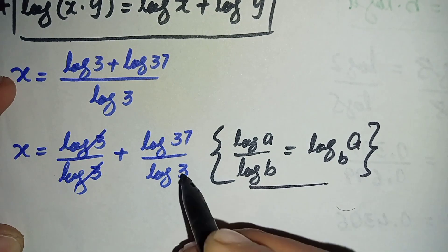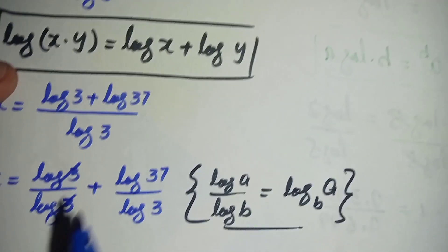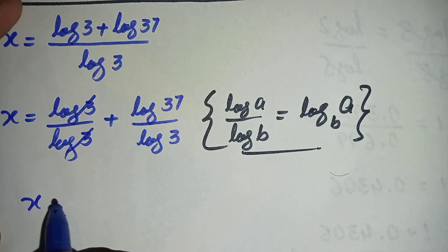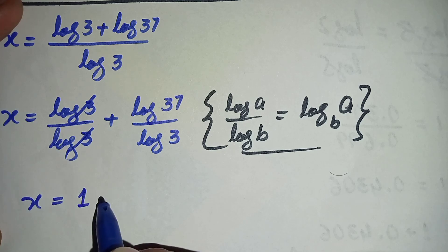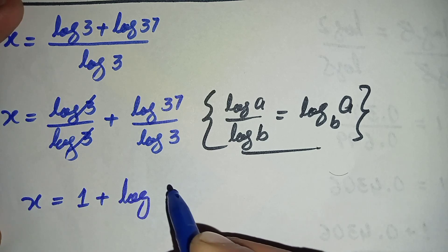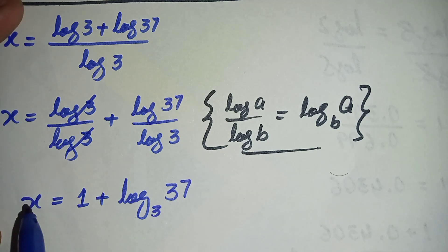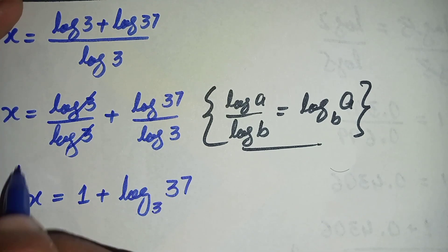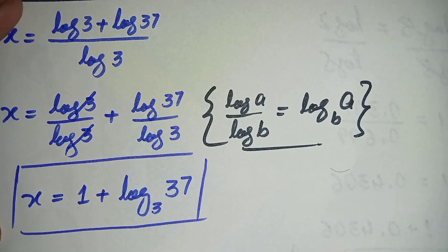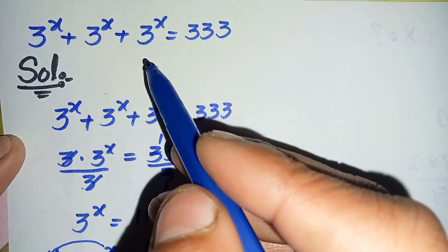So by using this log property, this log of 3 and this log of 3 cancel each other, giving 1. And log of 37 divided by log of 3 becomes log of 37 with base 3. So finally x is equal to 1 plus log base 3 of 37, which is the answer and solution of this interesting exponential math problem.